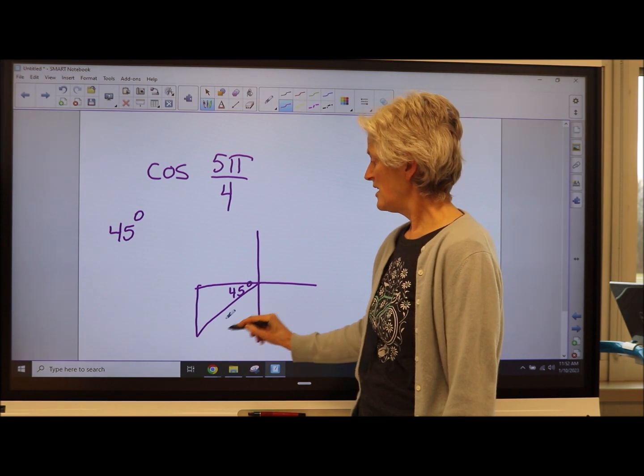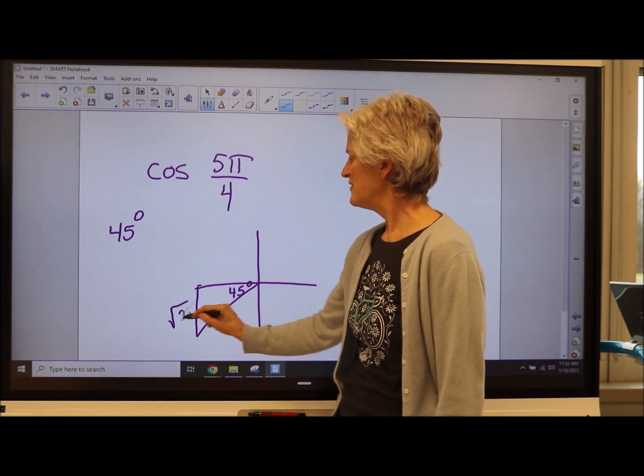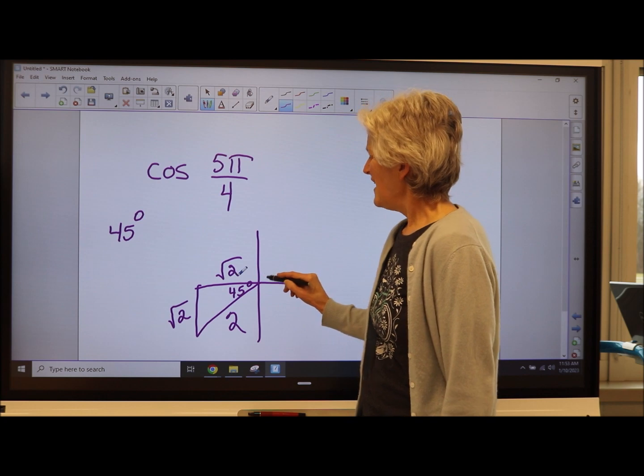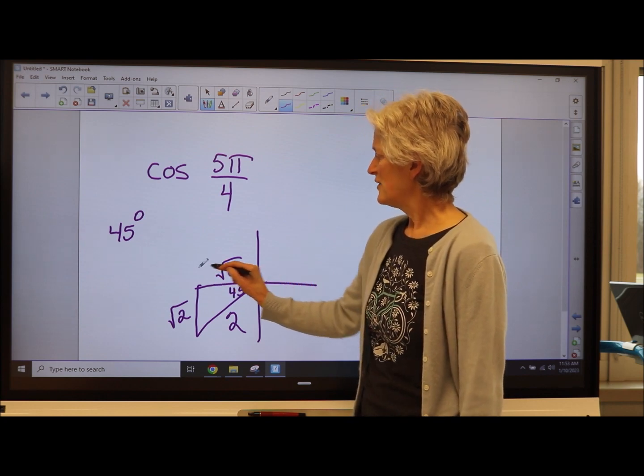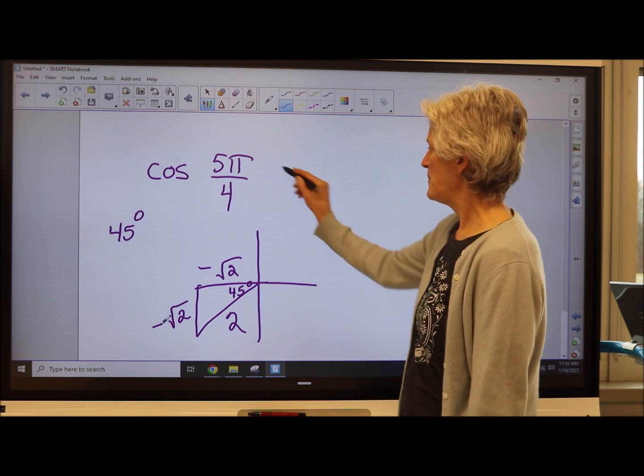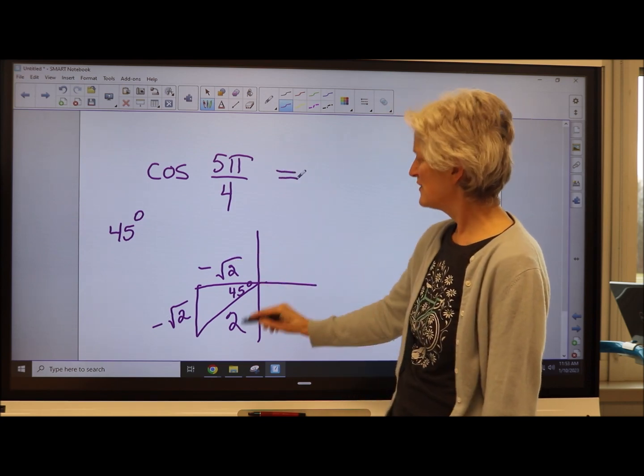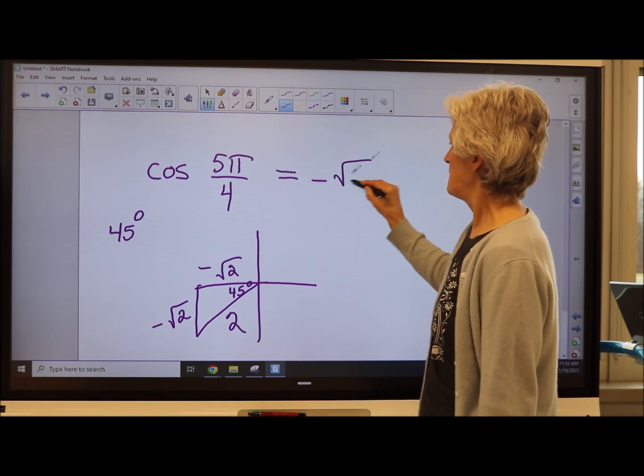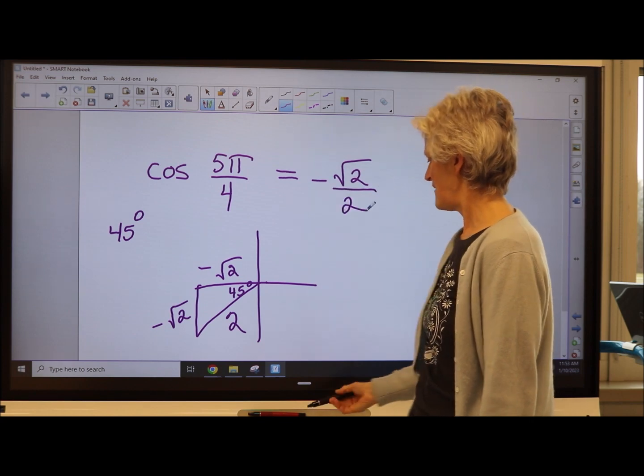I like calling my radius 2, which makes both of these sides the square root of 2. Of course, I'm going to the left in the x, so that's negative. I'm going down to my y, so that's negative. I have my picture. Cosine is my x over my r. And there we have it.